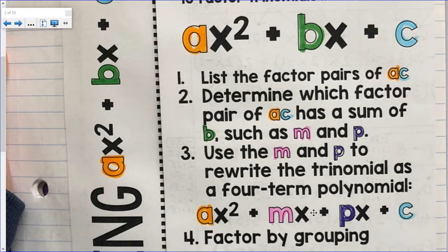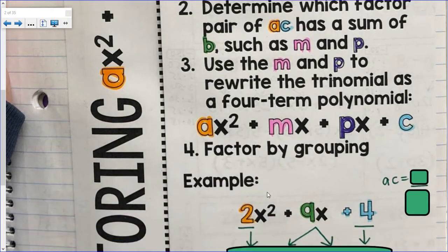But bx gets broken up into mx plus px. Kind of like the opposite of what we're so used to, we're so used to taking like terms, mx plus px, and putting them together. Now we're purposely breaking it apart to get a four-term polynomial, and once we get a four-term polynomial, we factor by grouping.